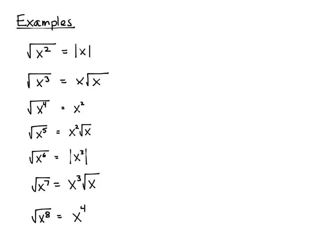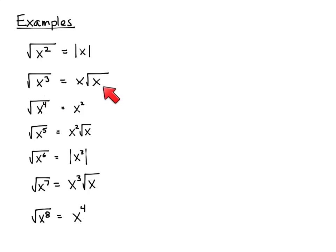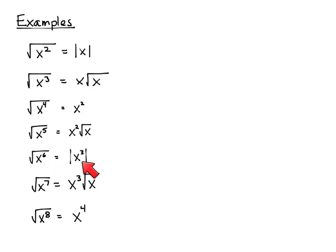To summarize: the first and fifth examples use absolute value, but the others don't. Ask yourself what happens if x is negative. If x being negative puts you outside the domain of the original expression, there's an implied restriction and no absolute value is needed. But if the expression takes care of itself — like x to an even power — and you get an odd power out after simplification, you need the absolute value.